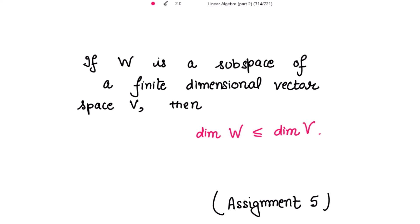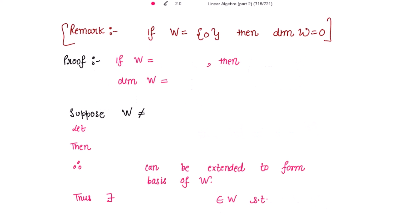Moving to assignment 5: if W is a subspace of a finite dimensional vector space V, then the dimension of W is less than or equal to the dimension of V.